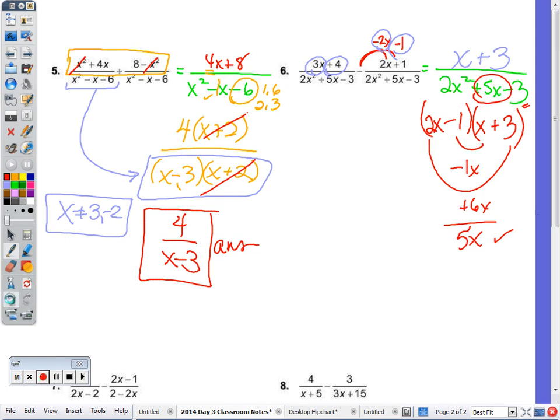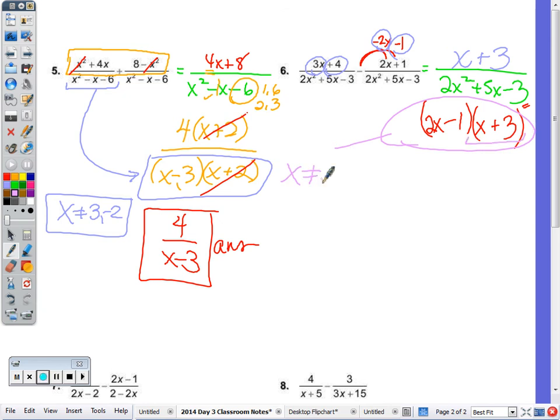So I'm going to undo that so we can go back to the restrictions. Restrictions, I need to look at the denominator. So when I look at the denominator, x can't equal, well, this one's easy. It's a negative 3.